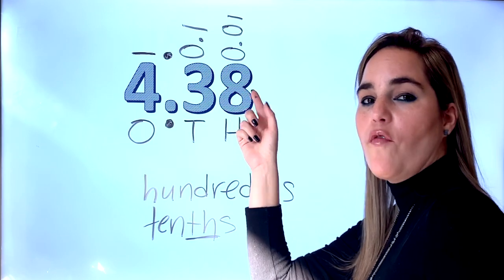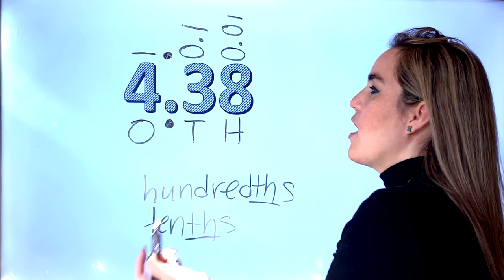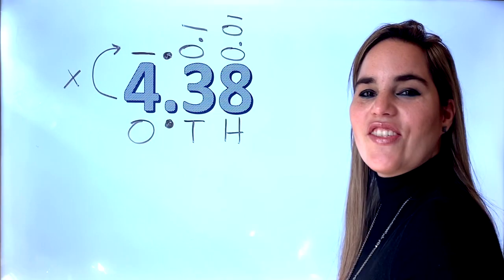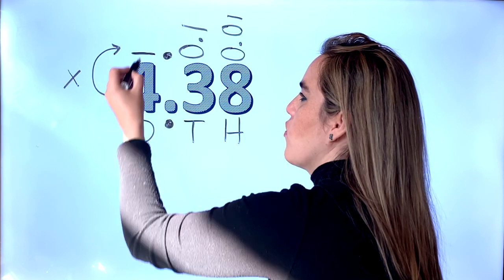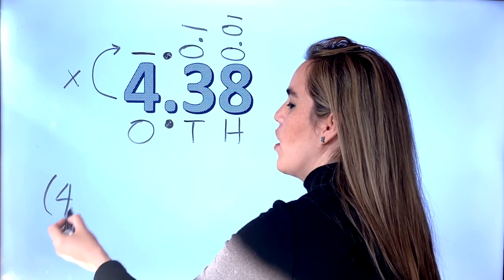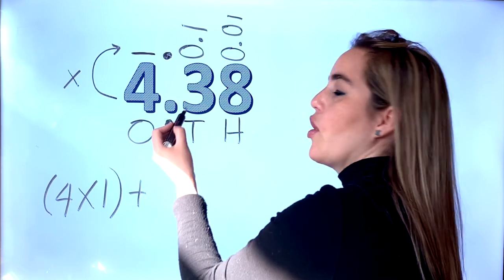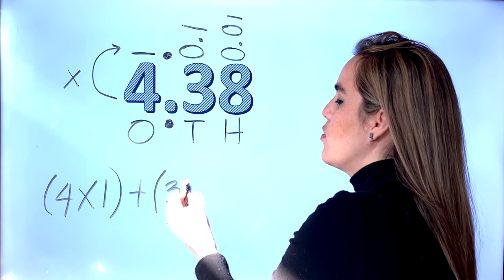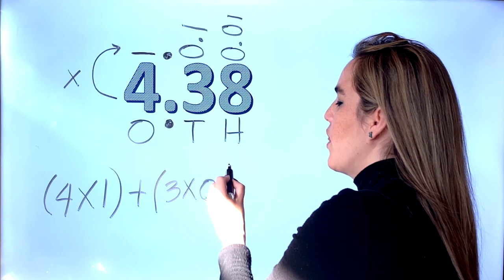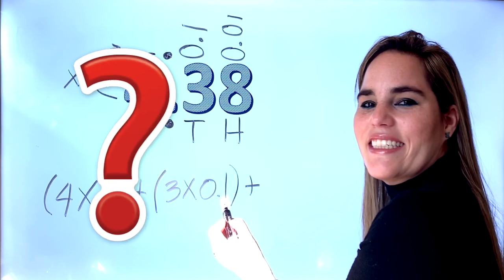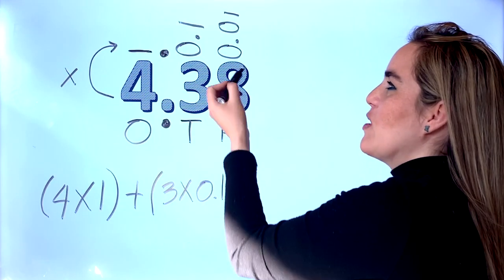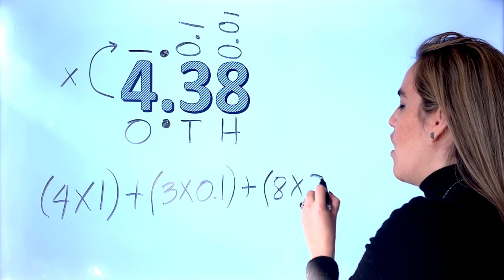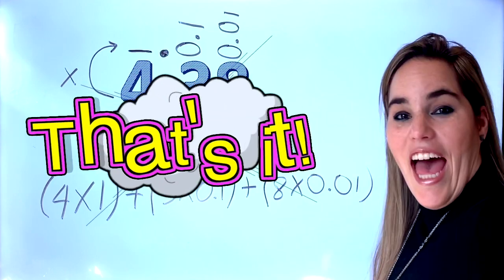Now we're going to do the expanded notation. The only thing you need to do is multiply each digit by its place value. Starting with the ones: four groups of one — four times one — plus three groups of one-tenth — three times zero-point-one — plus eight groups of one-hundredth — eight times zero-point-zero-one. And that's it!